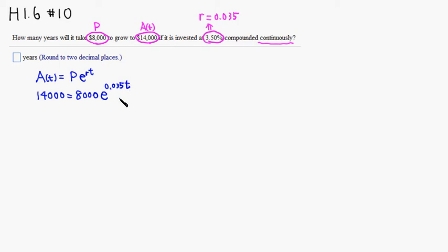We just need to solve this equation. First, I'm going to divide through by 8,000. So 14,000 divided by 8,000 is 14 over 8, which is the same thing as 7 over 4. Then you have e to the 0.035t.